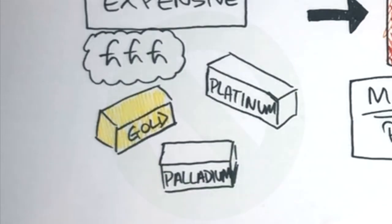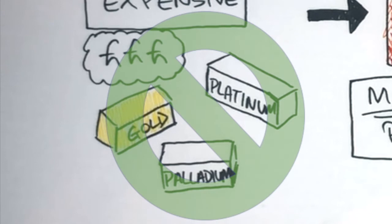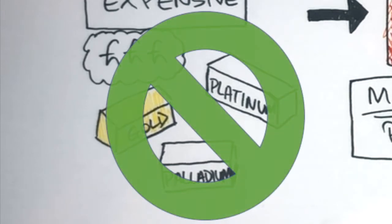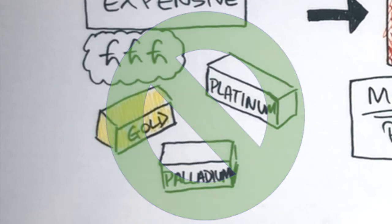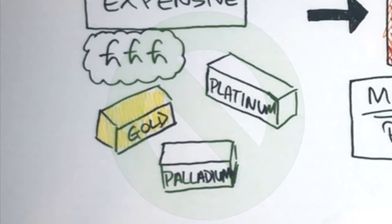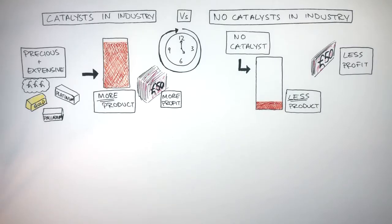However, after a while these catalysts eventually become poisoned, as impurities in the chemical reaction combine with the catalysts stopping them from working properly, resulting in the company needing to buy new catalysts again.